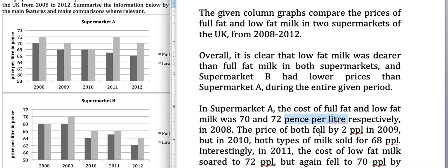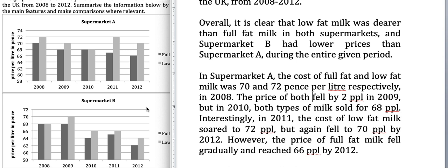In the rest of the graph, I'll use the abbreviation 'ppl' to reduce word count. The price of both fell by 2 ppl in 2009, and in 2010 both types of milk sold for 68 ppl. Interestingly, in 2011 the cost of low-fat milk rose to 72 ppl but again fell to 70 ppl by 2012. However, the price of full-fat milk fell gradually and reached 66 ppl by 2012.